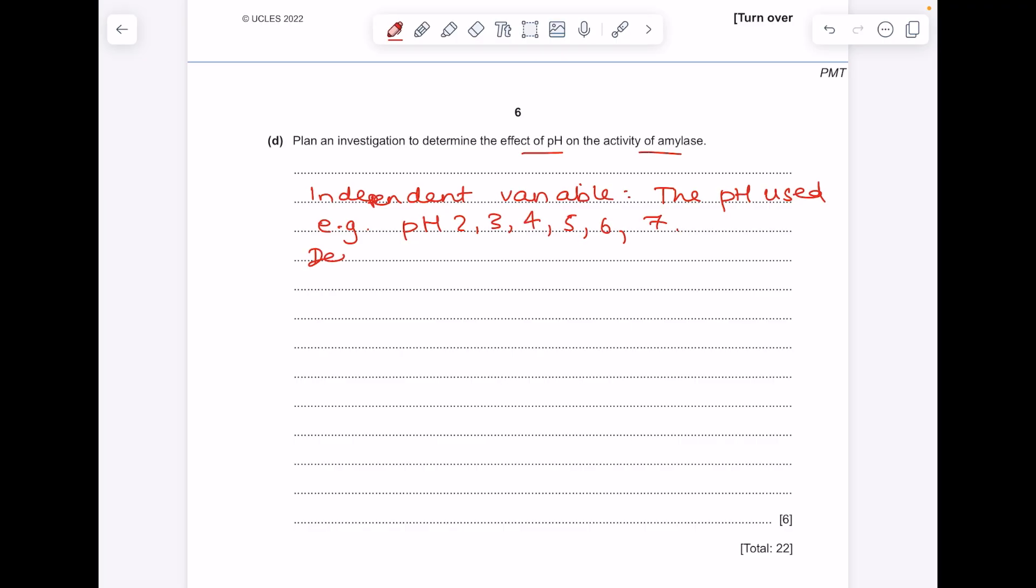Now we need our dependent variables. So what are we going to be measuring? Let's use the information in the experiment they gave to us higher up. So why not use rice again and look at the mass of reducing sugars produced? Because obviously, the higher the mass of reducing sugars, the more optimal the pH.